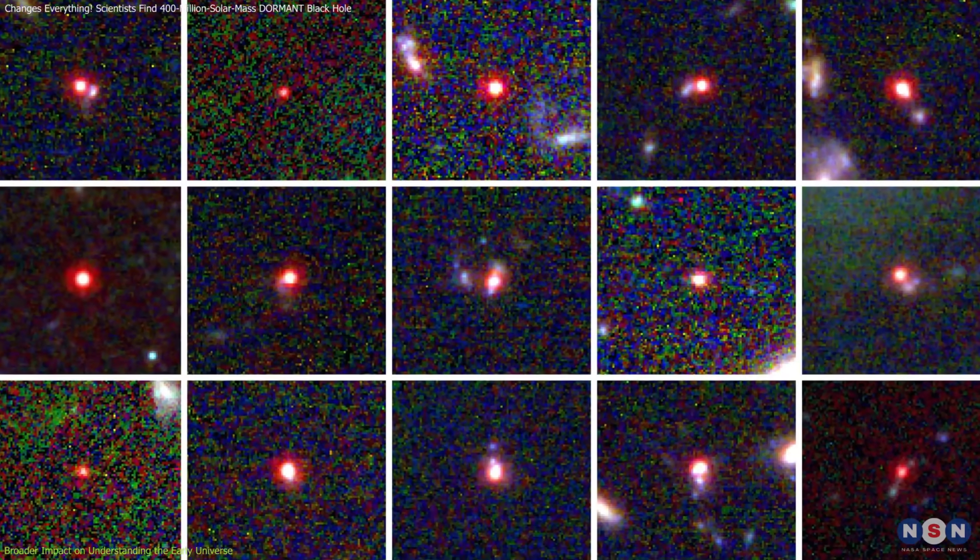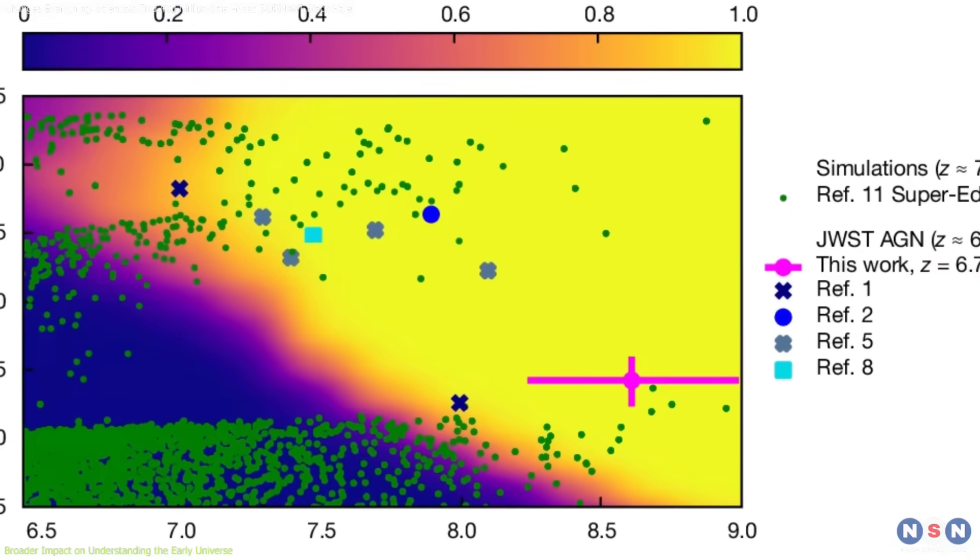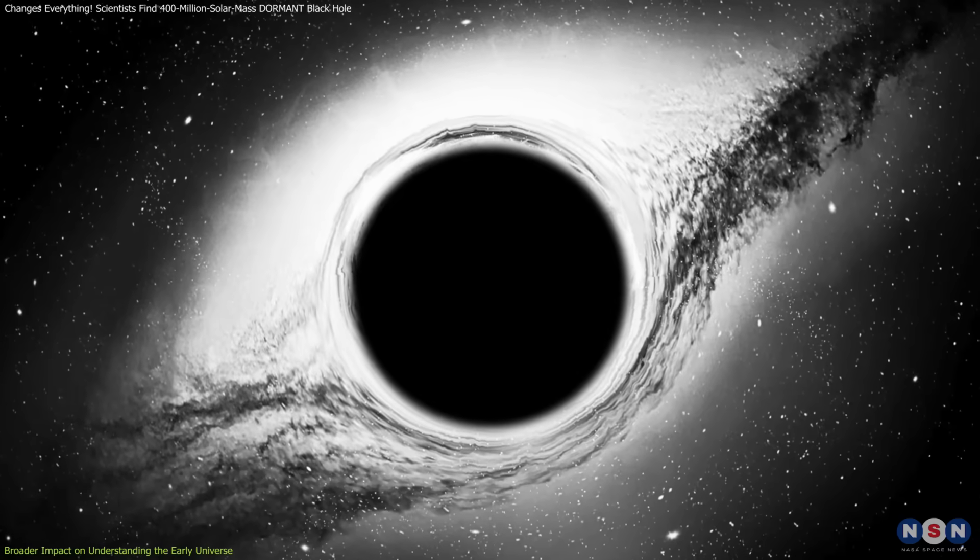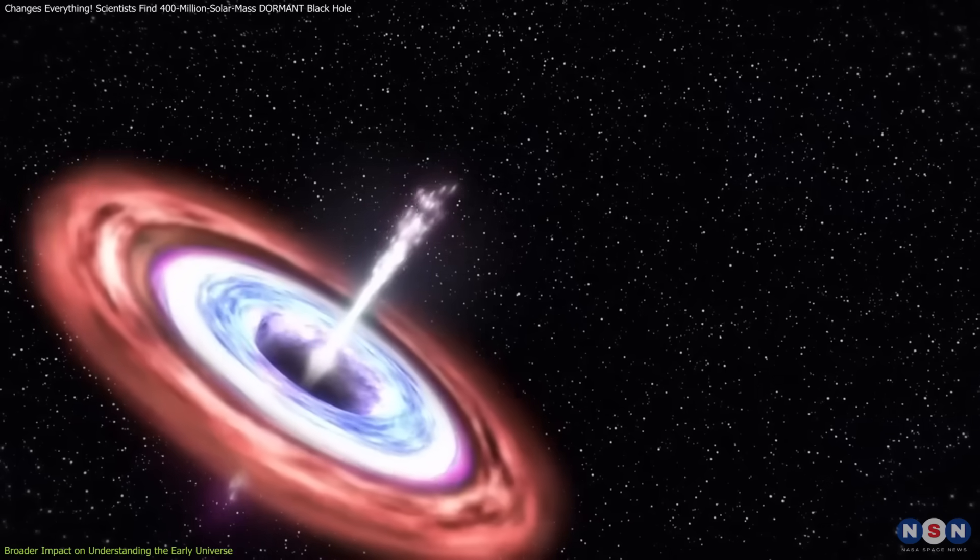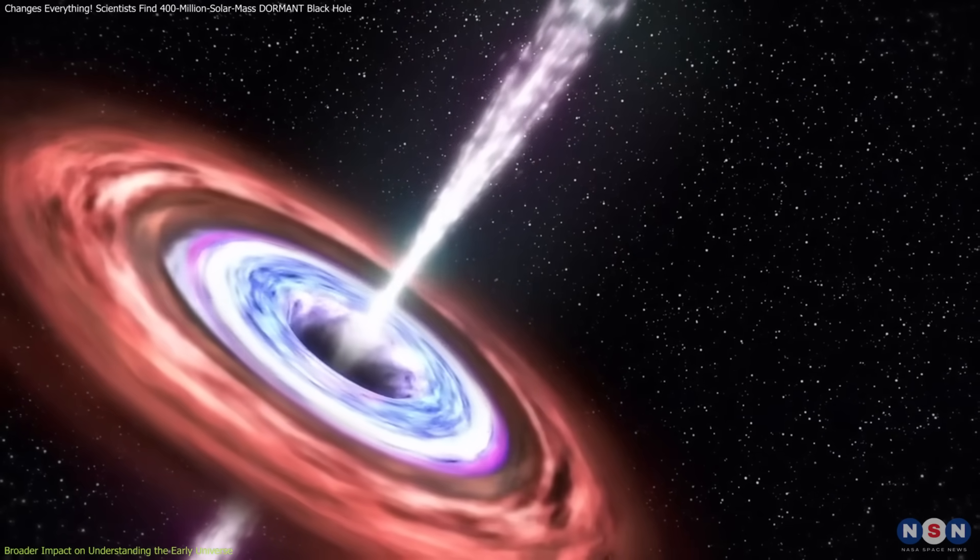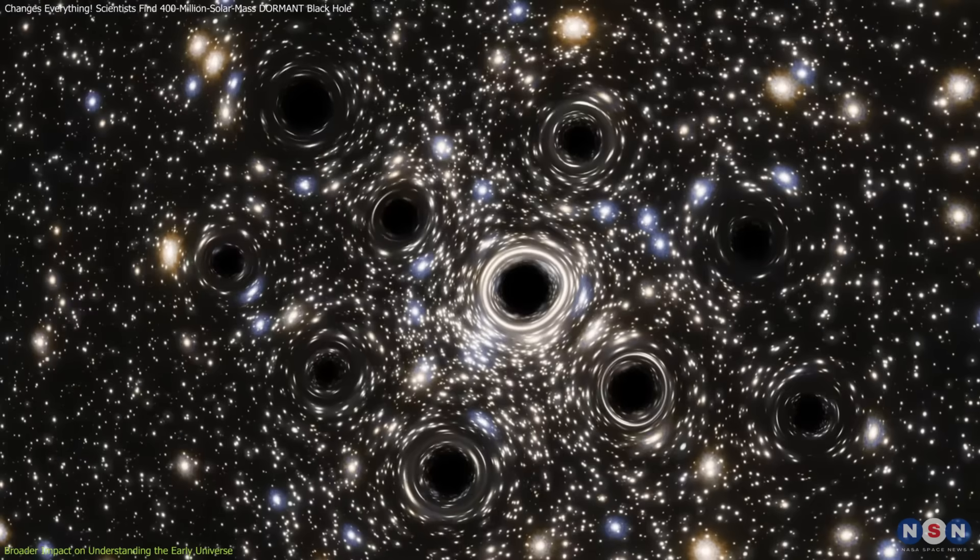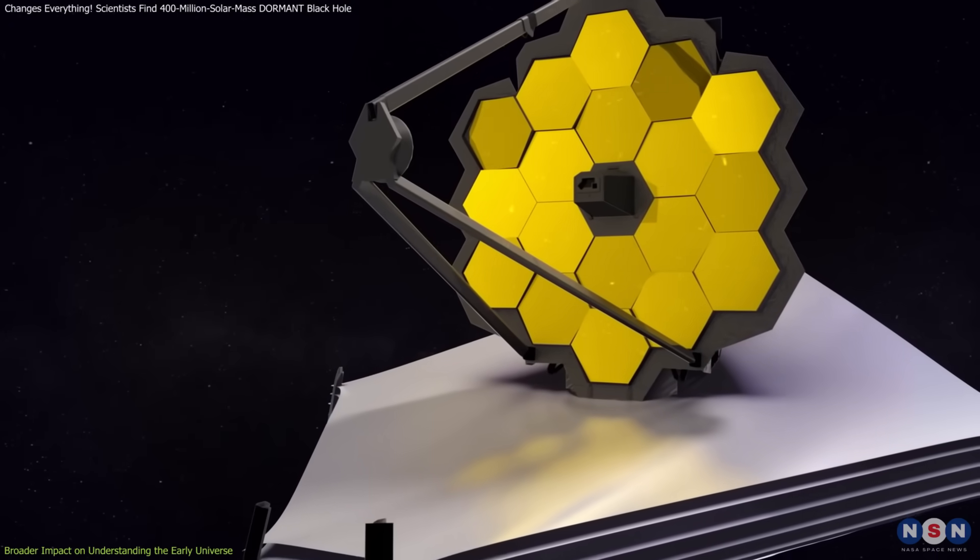When compared to other black holes detected by the James Webb Space Telescope, this one stands out, not for its size but for its dormancy. Most black holes from this epoch are actively accreting, emitting luminous energy that makes them easier to detect. This dormant black hole suggests that many similar objects might be hiding in plain sight, detectable only with advanced instruments.